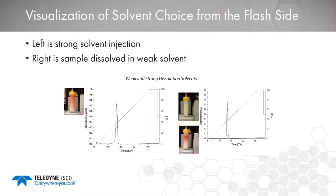To visualize weak versus strong solvent loading, we use flash columns where we can see through. On the left, a compound dissolved in a strong solvent has already traveled down to the bottom of the column just after loading — you see band broadening and poor retention. On the right, a sample dissolved in a weak solvent shows no color traveling down the column after loading until the percent B reaches a point where it begins to travel. This is a really good visual example of how compounds behave on the column when loaded in a weak versus strong solvent.